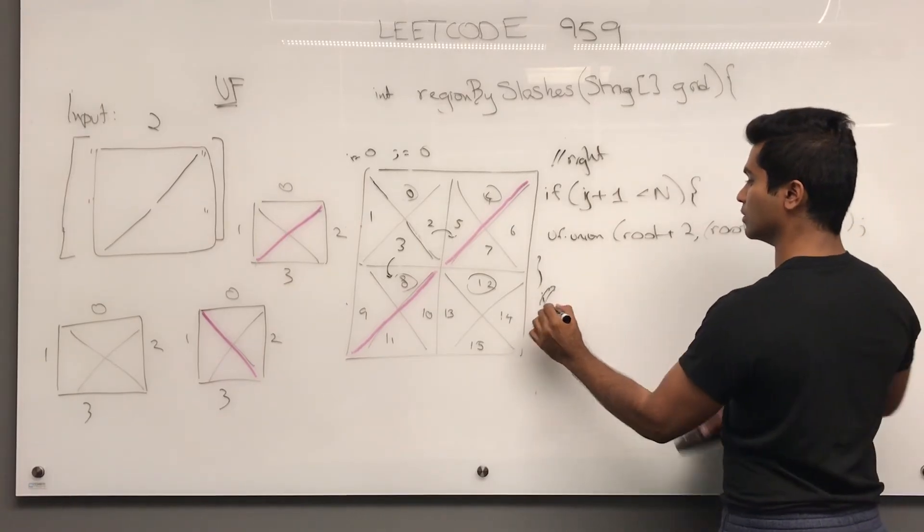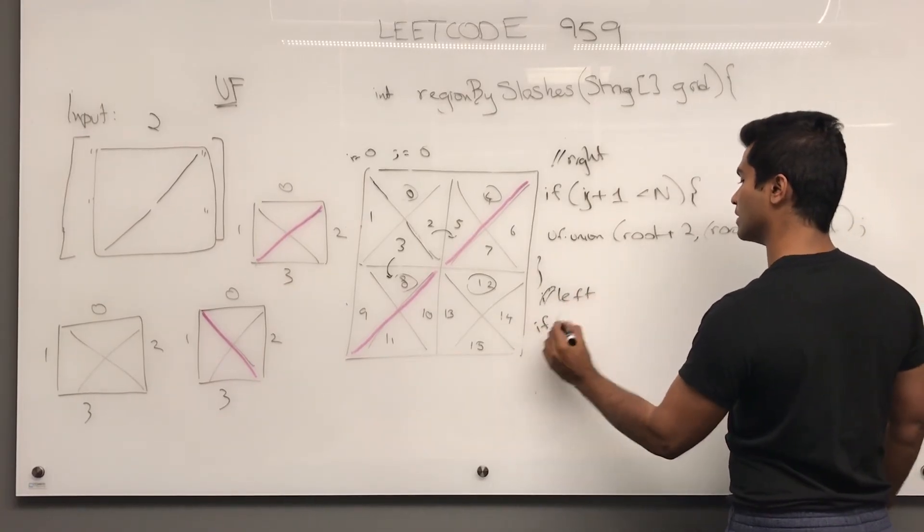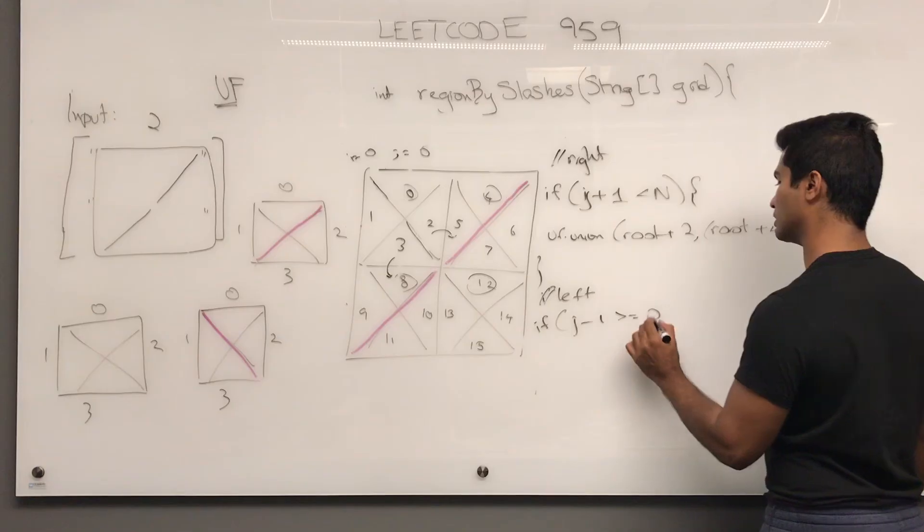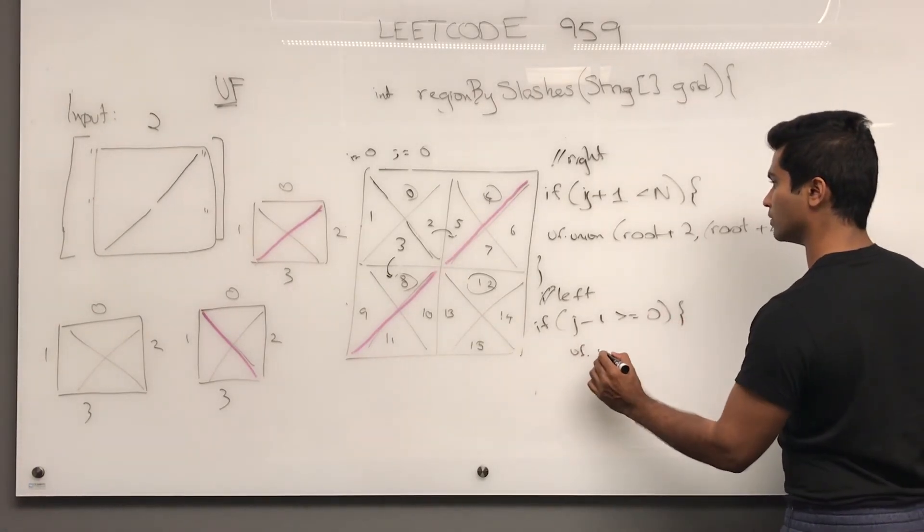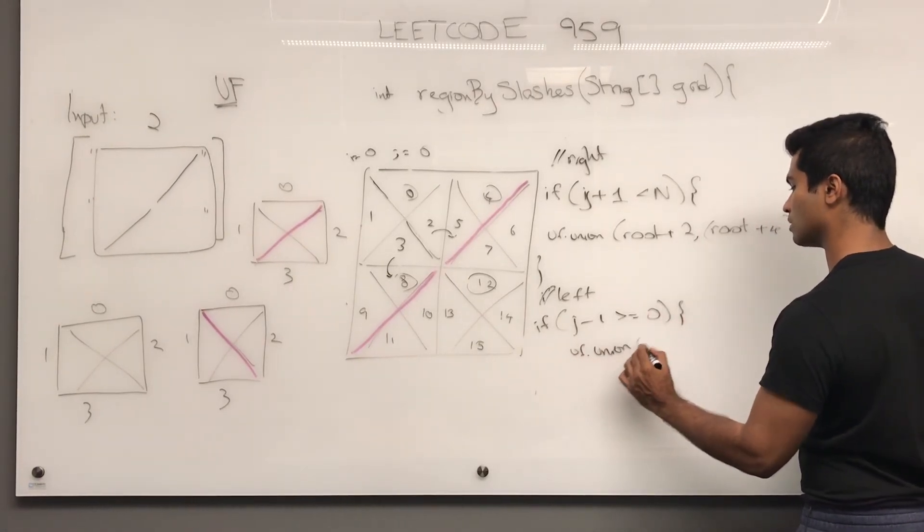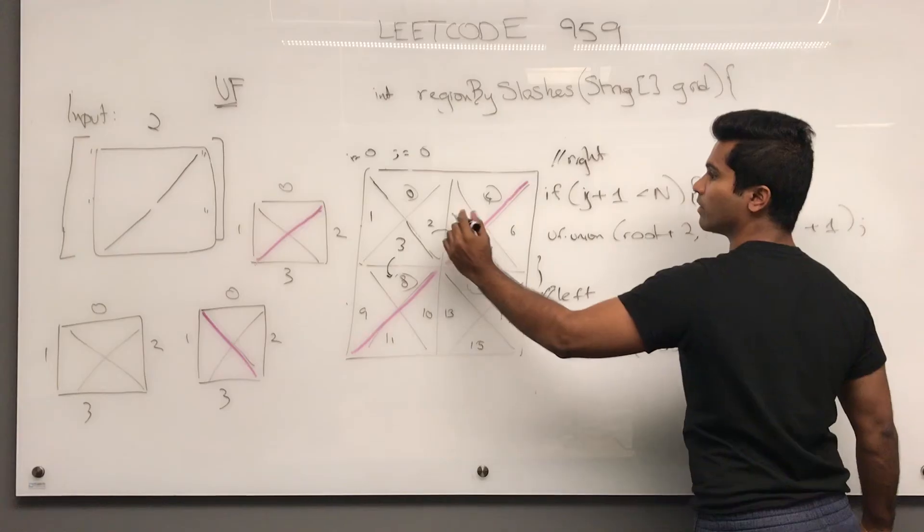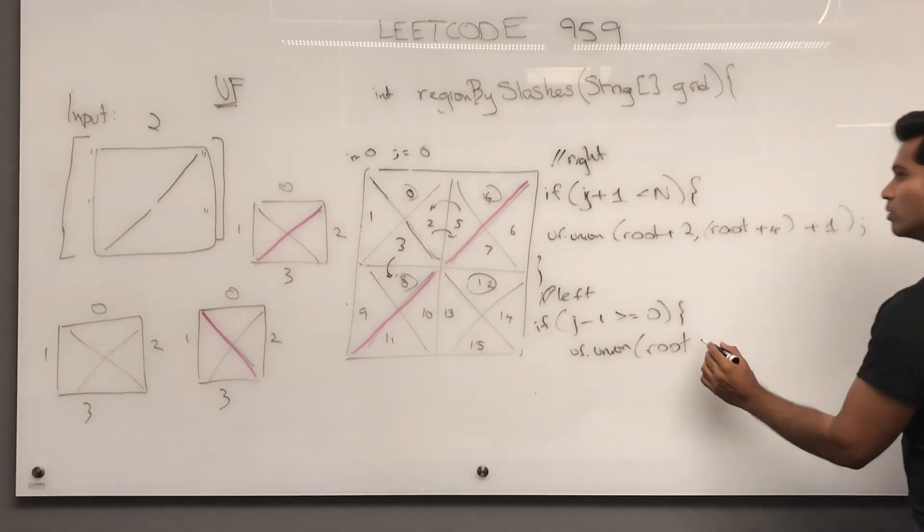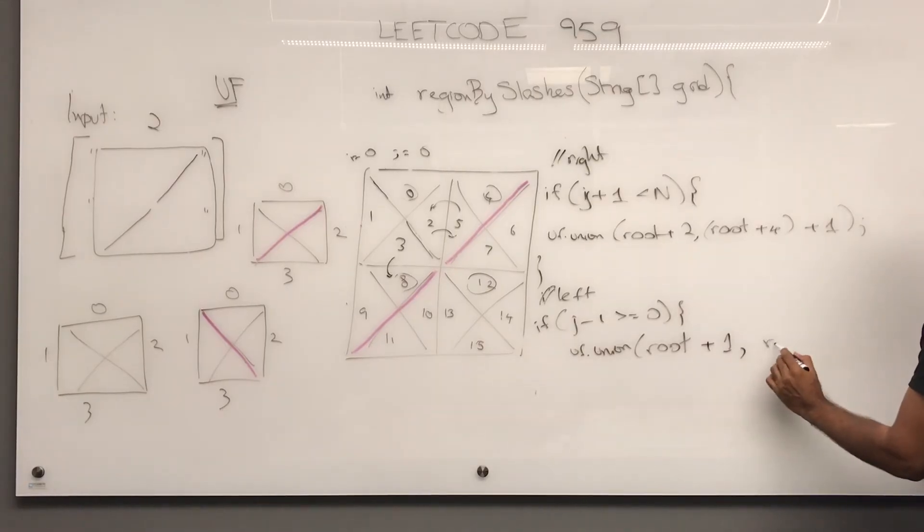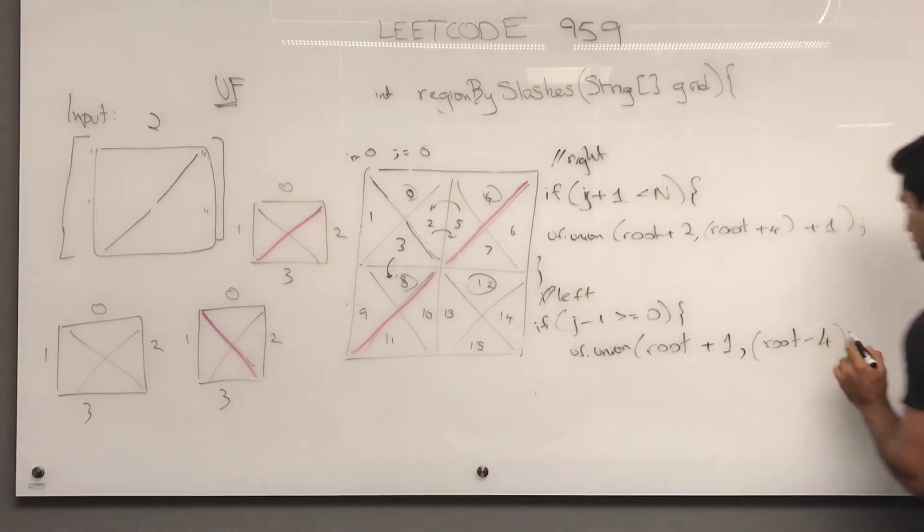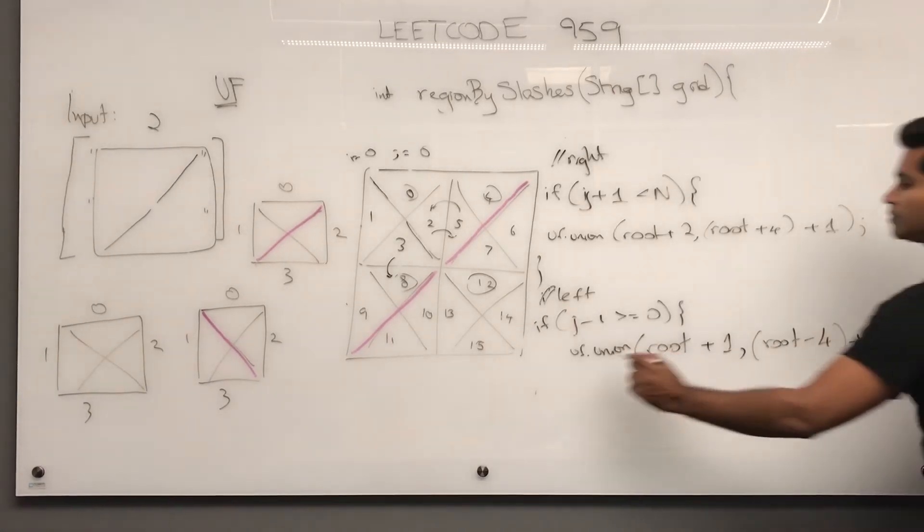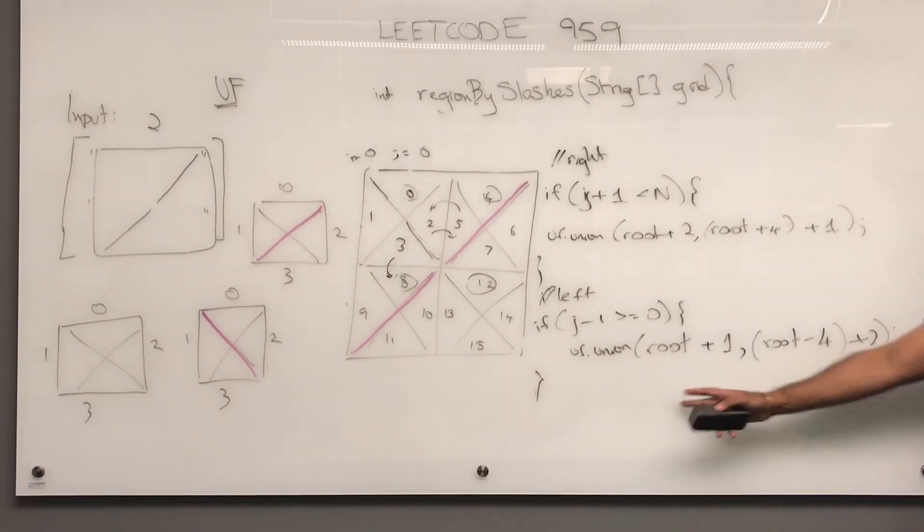Similarly, to do the left side, if j minus 1 is greater than or equal to 0, uf dot union, root. So if we're here and we want to combine here, if we want to combine 5 with 2, what we do is root plus 1, comma, root minus 4, go here, and then plus 2. So that's how we combine right and left, take a look at it.